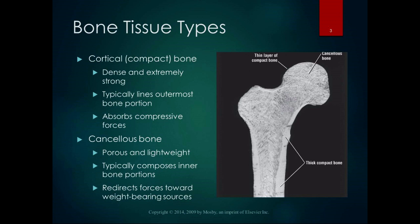There are basically two different bone tissue types. Bone is sometimes thought of as relatively inert or unchangeable, but it's actually very changeable and metabolically active. One of the major functions of bones is mineral storage — many chemical processes like muscle contraction and nerve impulses require calcium, and we have that storage in our bones. The two different types of bone are cortical or compact bone, which is dense and extremely strong, typically lines the outermost bone portion, and absorbs compressive forces.